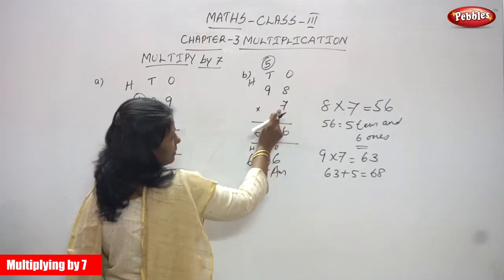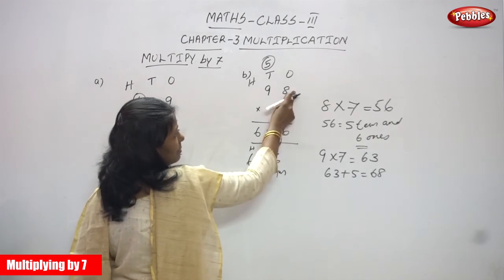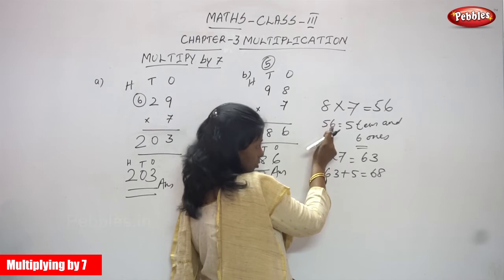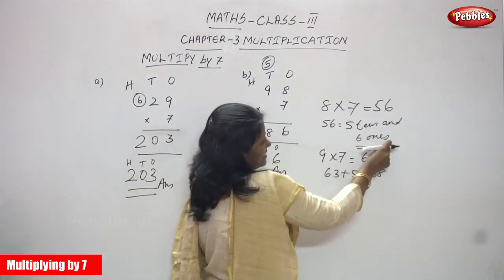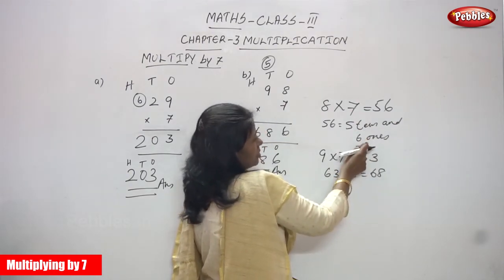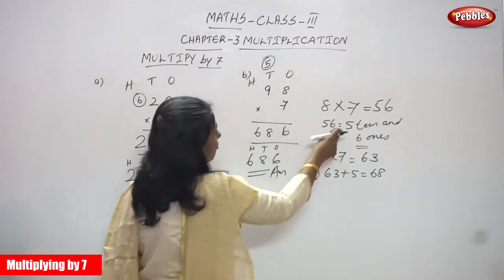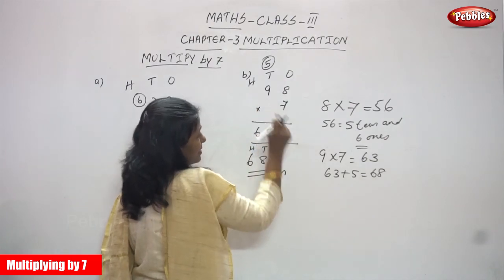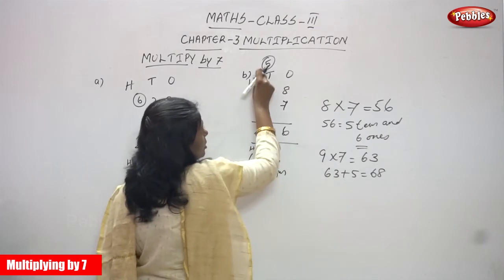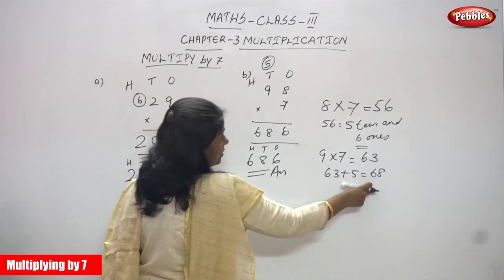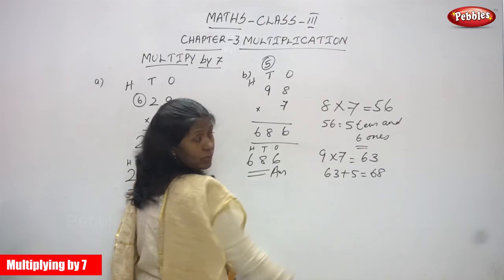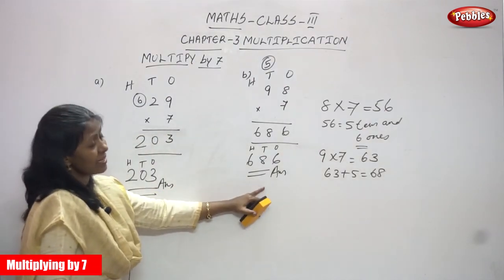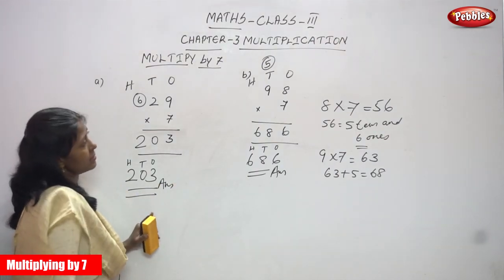So 98 multiplied by 7: first multiply the ones place — 8 into 7 is 56, meaning 6 ones and 5 tens. Write 6 in the ones place; the 5 is a carryover to the tens place. Then 9 into 7 is 63, plus the carryover 5 gives 68 — that is 8 tens and 6 hundreds. So the answer is 686. B question answer is 686 and A answer is 203.